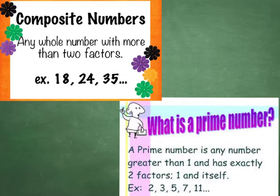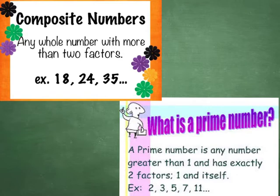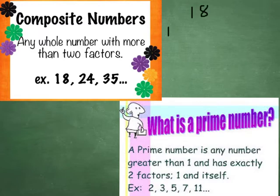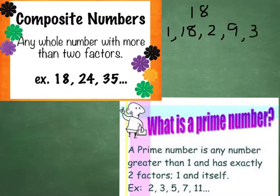So just what is a composite number and a prime number? A composite number is any whole number that has more than two factors. A factor is a number that will divide in evenly with no remainders. For example, 18 is a composite number because 1 and 18 are factors, 2 and 9 are factors, and 3 and 6 are factors. So 18 has lots of factors, so it is a composite number.